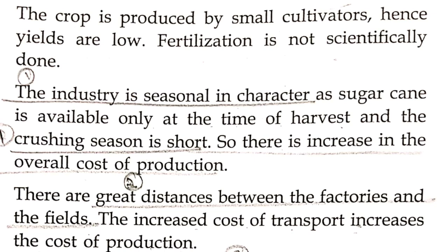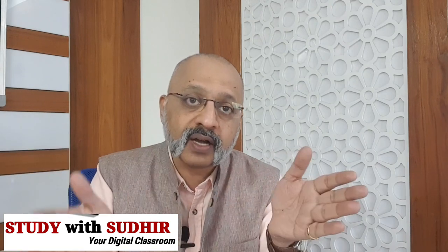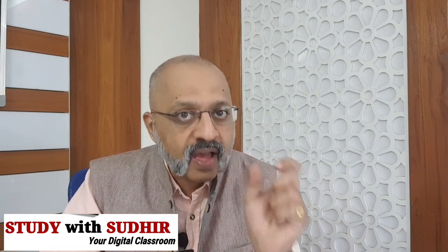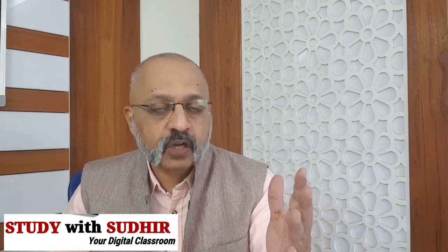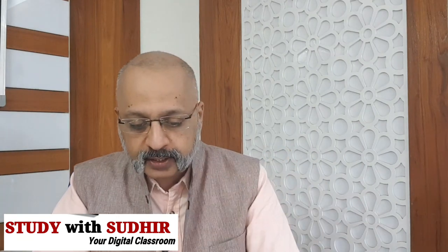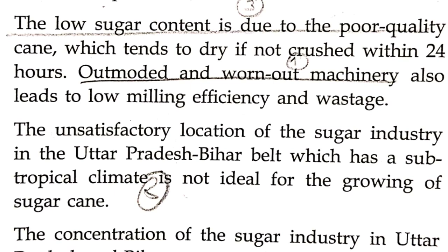Most importantly, the industry is seasonal in character — sugarcane is available only at harvest time. In particular, harvest happens around January during Pongal/Sankranti. The crushing season is short. The cost of production is therefore high. There is also considerable distance between sugar mills and the fields — by the time cane is transported, it dries out, reducing the juice yield, and transport costs add to the overall production cost.